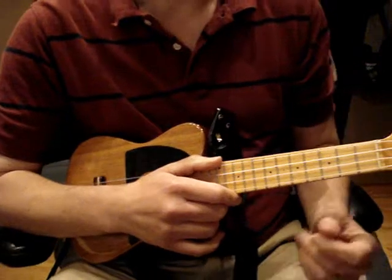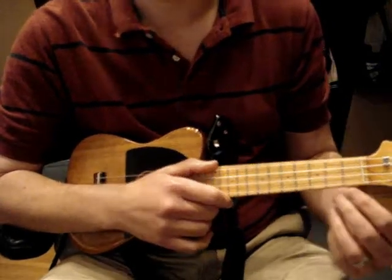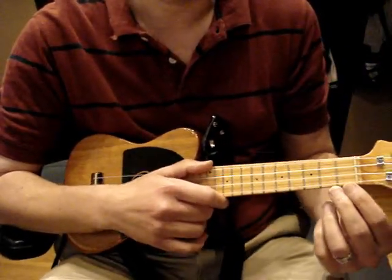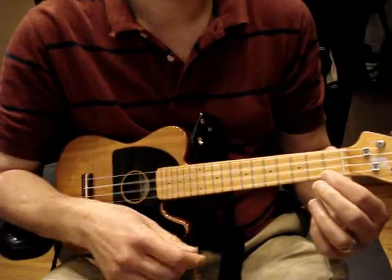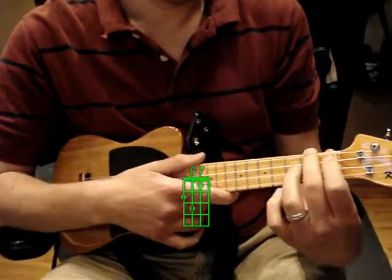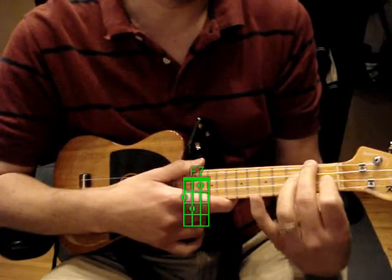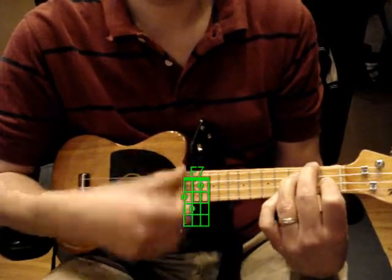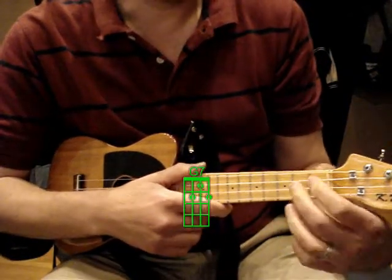First, the chords. Very easy. C7, F7, and G7. That's C7. F7, that's F chord, and then 7. And G7.